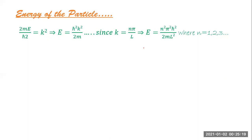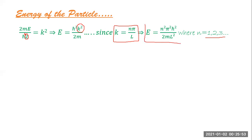Now let us find the energy of the particle — this is where quantum mechanics departs significantly from classical mechanics. We had k² = 2mE/ℏ², so E = ℏ²k²/2m. Substituting k = nπ/L, the energy values for a particle in a one-dimensional box are Eₙ = n²π²ℏ²/(2mL²).